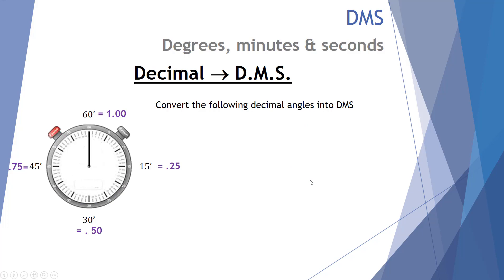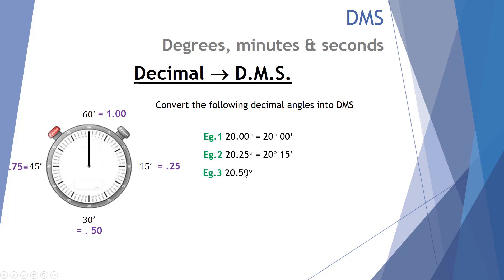Let's look at some examples converting decimal angles into degrees-minutes-seconds. Example one: if we measured an angle at exactly 20.00 degrees, that's just 20 degrees with no minutes — there's no leftover. Example two: 20.25 degrees. That's 20 degrees, and 0.25 is a quarter of a full degree, so that's 15 minutes. Example three: 20.5 degrees. The degrees stay at 20, and 0.5 of a degree becomes 30 minutes. Example four: 20.75 degrees. 0.75 is three quarters of the way around, represented by 45 minutes — so 20 degrees and 45 minutes.